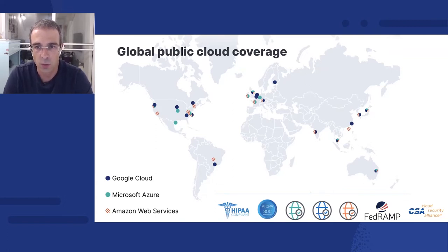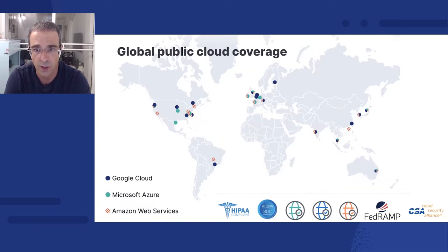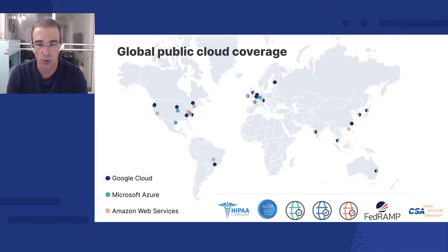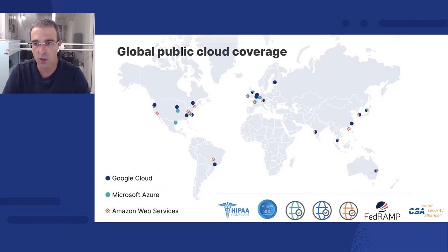We've invested heavily in our regional presence and have deployed Elastic Cloud in 45 regions across the three major cloud providers. Elastic Cloud customers can deploy in all these regions from a single account and diversify their cloud investments. Customers can also implement disaster recovery policies across these providers right from within Elastic Cloud. Certifying Elastic Cloud in key compliance programs like SOC 2, FedRAMP, HIPAA and others means we hold ourselves to the highest standards and give you utmost confidence and peace of mind.